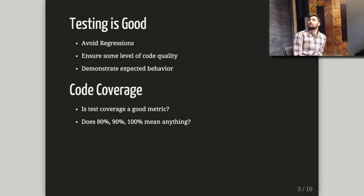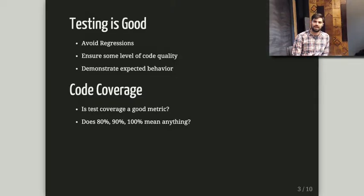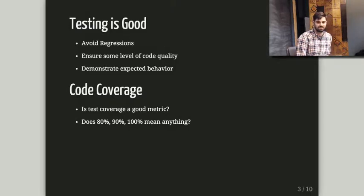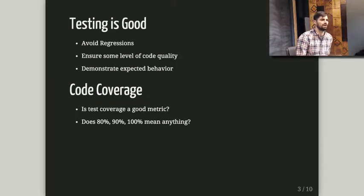Along with testing, we often look at a metric called code coverage. So we shoot for some number — 80%, 90%, the holy grail of 100% that hardly any production-level system reaches. But is that a good metric? Is code coverage meaningful? Does it tell you how good your tests are, or is it a bunch of smoke tests that call every method but have zero assertions? You don't really know what that code is doing.